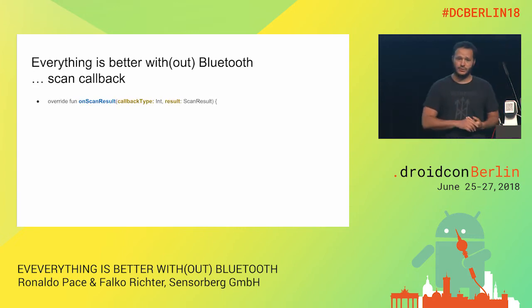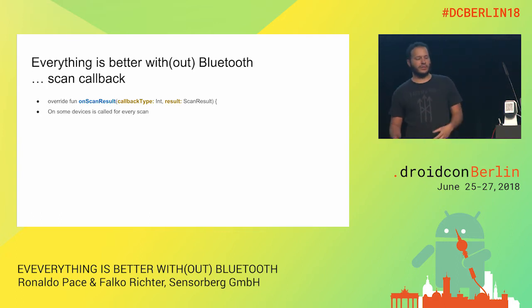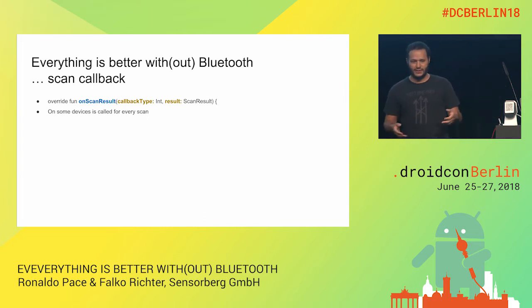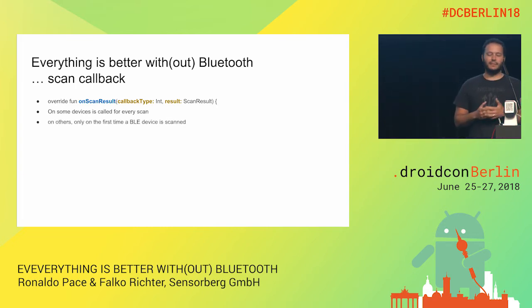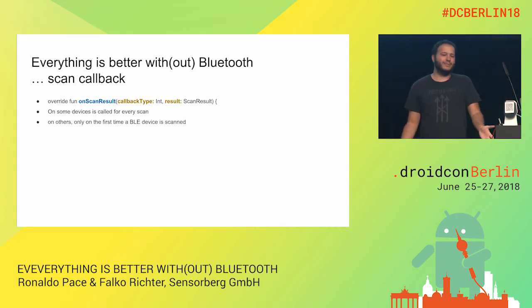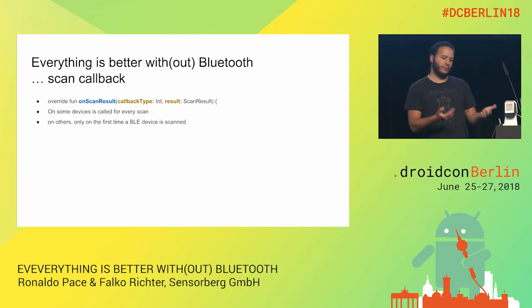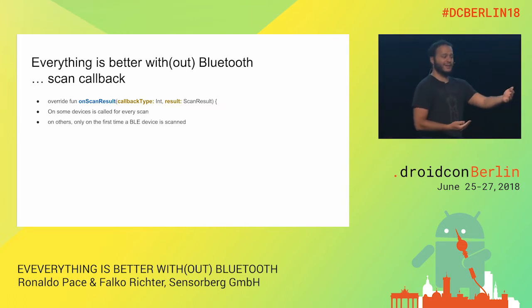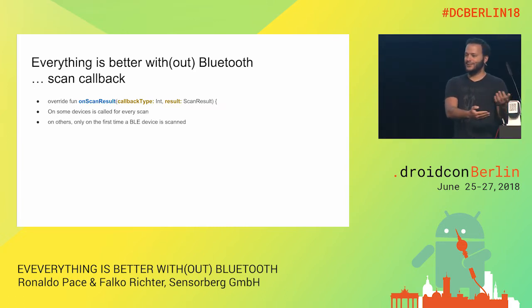On the scan callback, on some devices you receive a callback on every single scan — this device here has two Bluetooth chips inside and broadcasts every half second, so in 10 seconds you'd get at least 20 scans. But on some devices, you only get the first time the MAC address is picked and then never again. So if you're trying to get variations in signal intensity to see how close you are — like in a building scenario where you have a door here and another one there and the user is walking by — you need to know which is the nearest door.